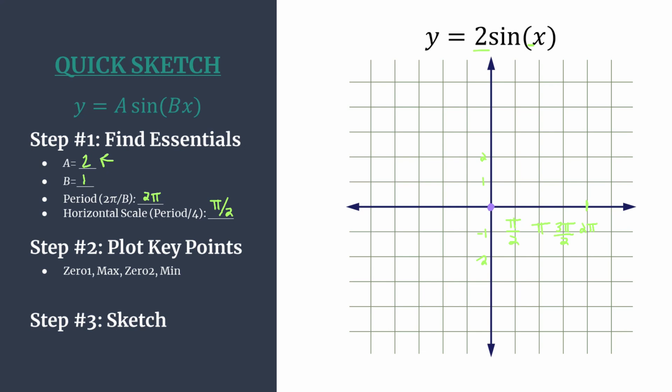Our maximum occurs at our first horizontal tick mark, pi over two. To get the y coordinate, simply look back to that a value. It's two in this case, so we know that's the y coordinate. You can see the amplitude, the distance from one of your zeros vertically up to that point, that maximum, is two units.